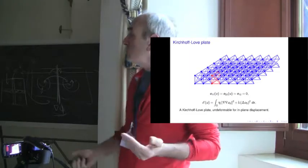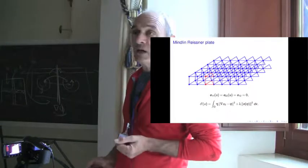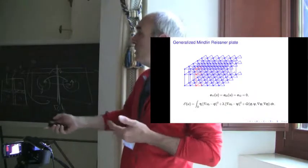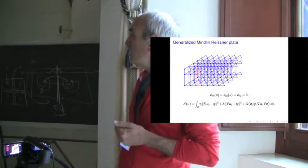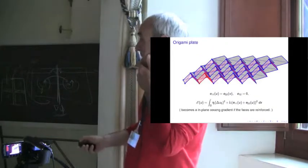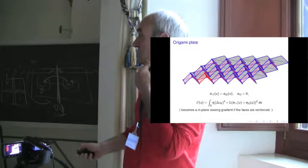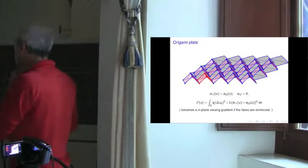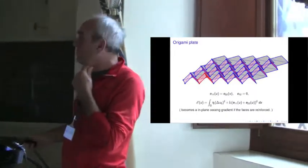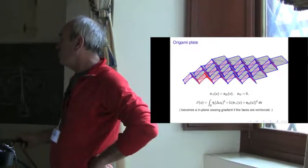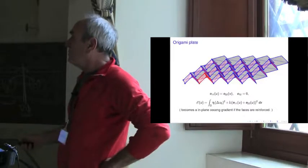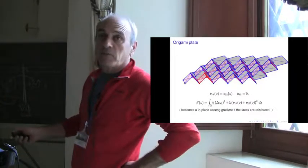You can pass to plates. So, this is a Kirchhoff-Love plate, classical one. This is a Mindlin-Reissner plate, where you have some director vectors. You can make some generalized Mindlin-Reissner plates with two directors, phi and psi, and you can have as many as you want. You can check what an origami plate gives — it gives an energy like this one which has bending terms and terms related to... you have a constraint which is very interesting here, between the two horizontal directions. And it becomes more complicated, and in-plane second gradient also, if the phases are reinforced by a node out of the phase.